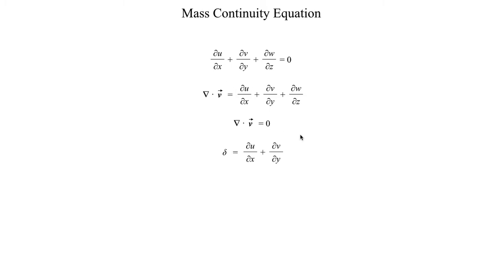Another definition you'll commonly see is the horizontal divergence, usually defined as this lowercase Greek delta, equal to du/dx plus dv/dy. This is actually one of several horizontal kinematic definitions that we'll look at — we'll take a look at the other three in the next lecture. For now, we'll focus on only this horizontal divergence term, delta, which looks at divergence acting in the horizontal plane, in the x and y, or zonal and meridional directions.